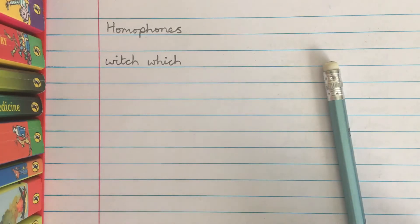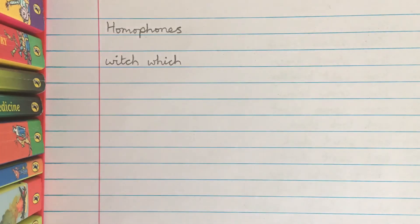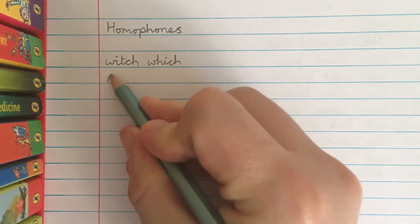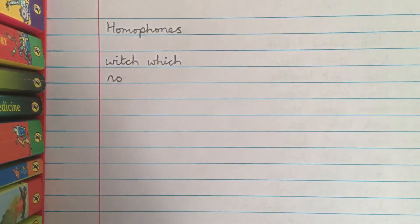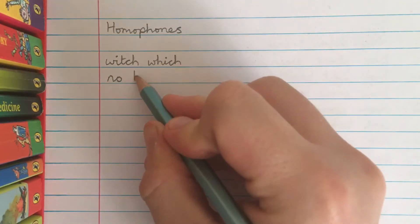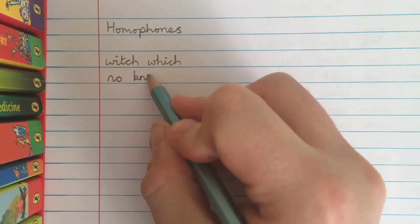Let's have a go at writing some different homophones together. So have a go at writing the word no. No can be written N-O or it could also be written K-N-O-W.